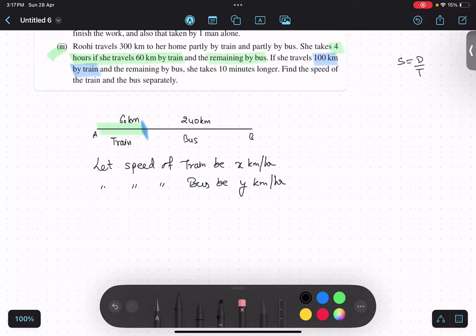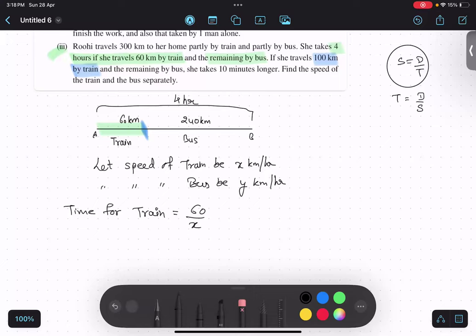And they have given us the total time. The total time in the first case was four hours. So they need to find out time, so time formula becomes distance upon speed. So we will calculate time for train. So how much time she took on train? What was the distance covered in train? 60. 60 upon, what is the speed of the train? That is x. Make sense? Yes.